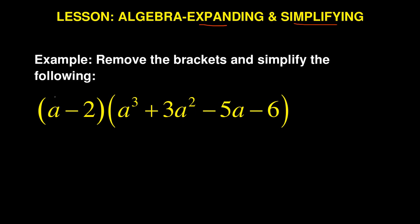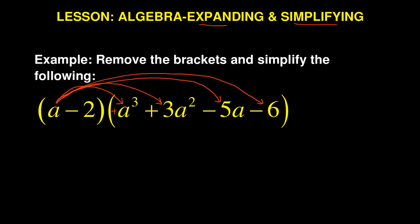When you are expanding, you do what you call distributing. So you start with the A — the A will multiply the first part, which is the A cubed. It is positive in this case because if there is no sign before it, the default sign is positive. And the A will multiply the following number with the sign. Don't forget, the sign is important. The A will keep multiplying each following number together with its sign.